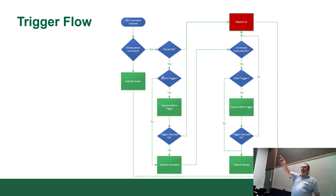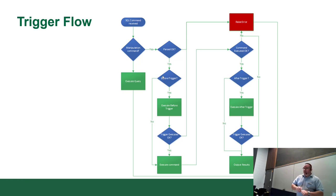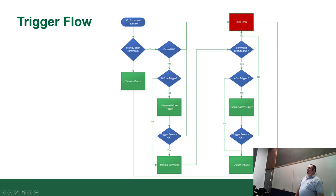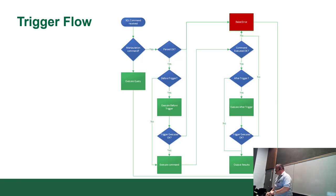After the data's been written, it checks: is there an after trigger? Yes or no. If there is, it tries to execute it. If anything goes wrong — and they finally fixed this in MySQL because for the longest time it was completely broken there — if anything goes wrong from the point where it parsed to where it outputs results, it rolls everything back. It would roll it back like none of it ever happened, because it's written in a transaction.